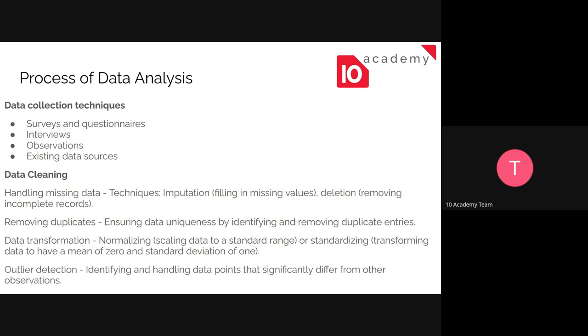So after we collect the data, the data could be messy. It could have null values. Null values means non-existent values, it could be nothing. It could have duplicates and so on. So the next thing that we do after we get the data is clean it. Cleaning the data could be handling the missing value by using imputation or removing them. Imputation means filling them. So when you fill the data, you need to have a strategy.